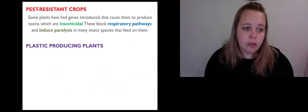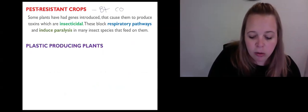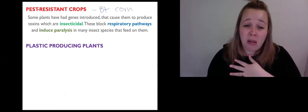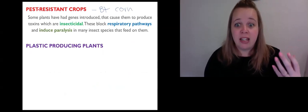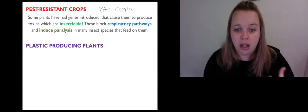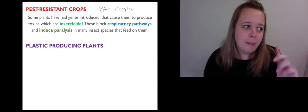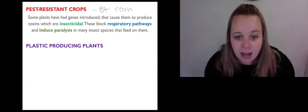You can also, so some of those pest resistant crops, these are things like the BT corn. The BT toxin, what it actually does is it affects the respiratory pathways of insects and prevents them from breathing properly. And essentially they die from suffocating, which is a bit nasty, but they are pests to the industry. And these are some of the issues that I want you to start thinking about.